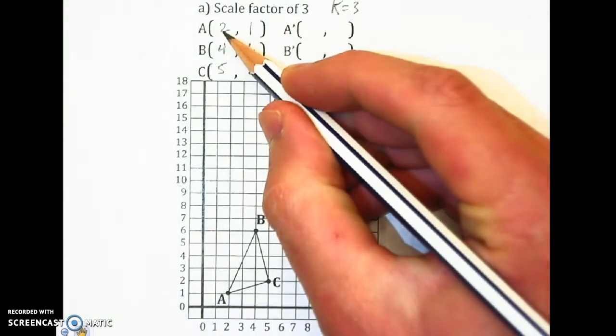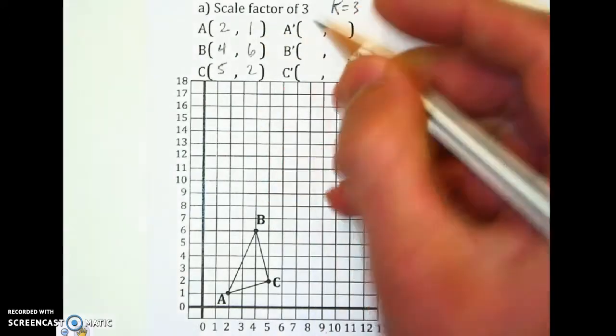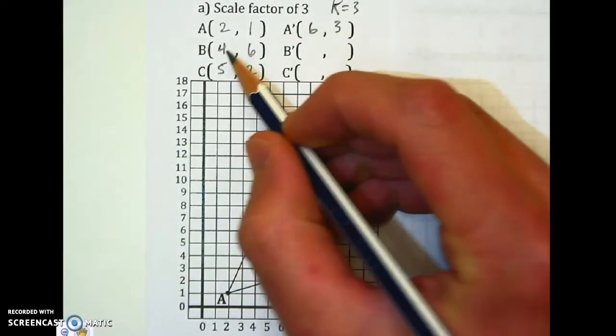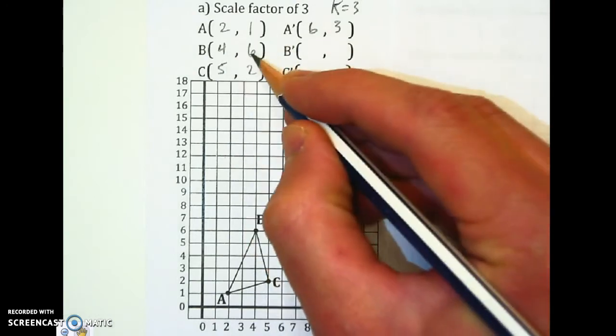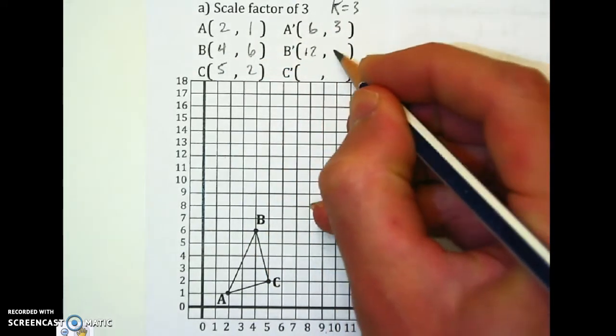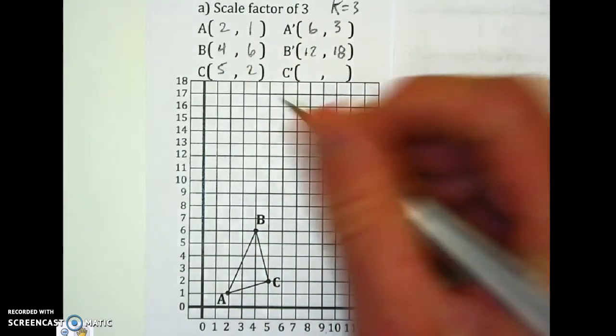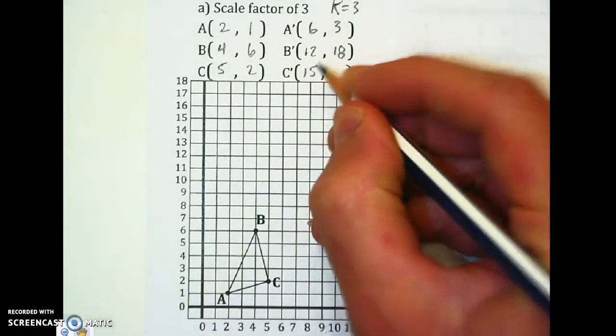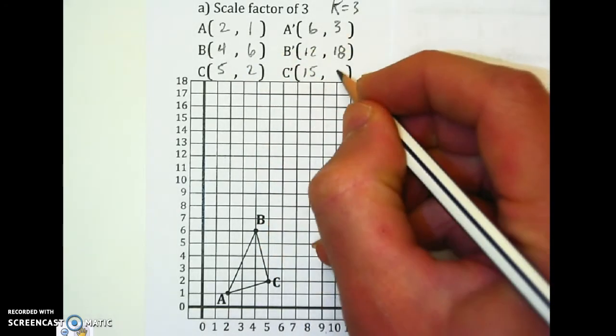So I'm going to times by 3 here and times by 3 here, so I get 6 and 3. Right here I'm going to get 12 and 18. 3 times 5, 15. And 3 times 2, 6.